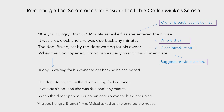So let's have a read of these sentences in the new order: 'The dog Bruno sat by the door waiting for his owner. It was six o'clock and she was due back any minute. When the door opened Bruno ran eagerly over to his plate. Are you hungry Bruno? Mrs Maisel asked as she entered the house.' This is the order that makes the most sense — we are introduced to Bruno, we understand why he's waiting and what time it is, there's the action of his owner opening the door, and then the final action of her entering and seeing that Bruno is hungry.